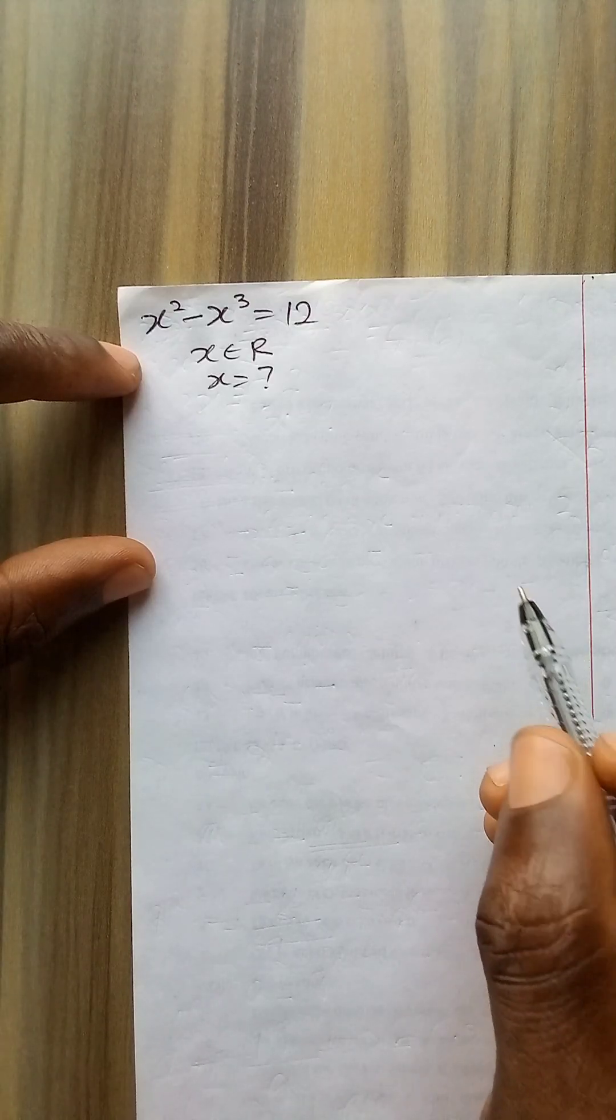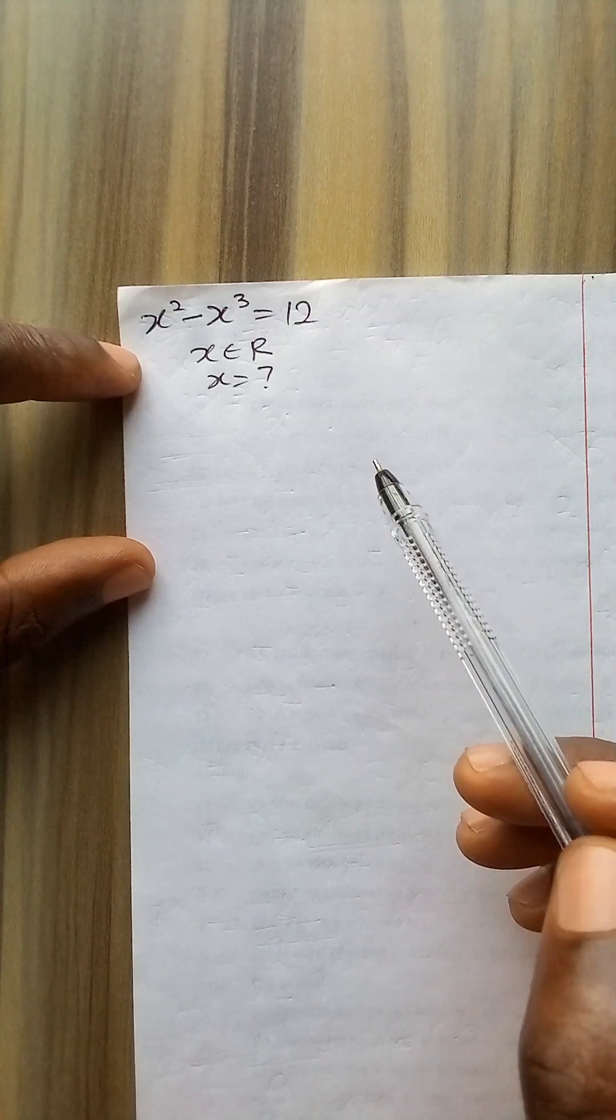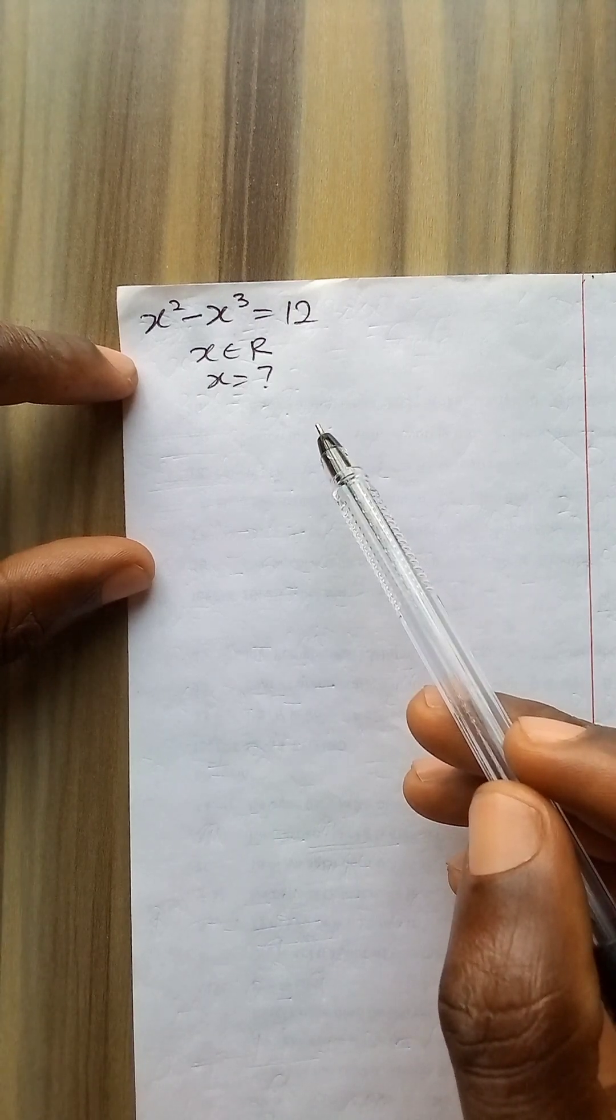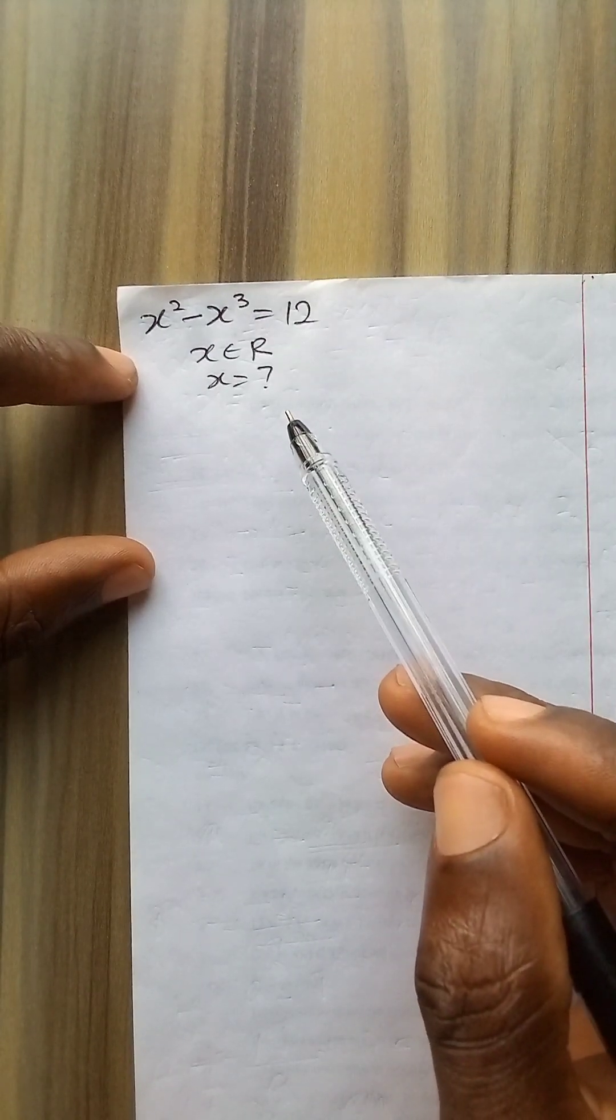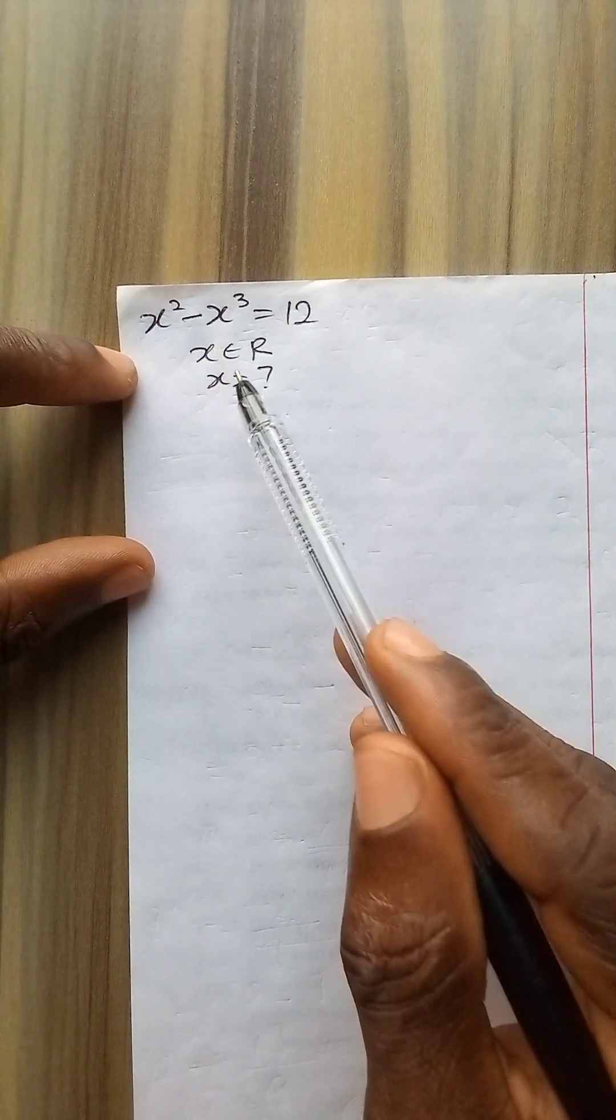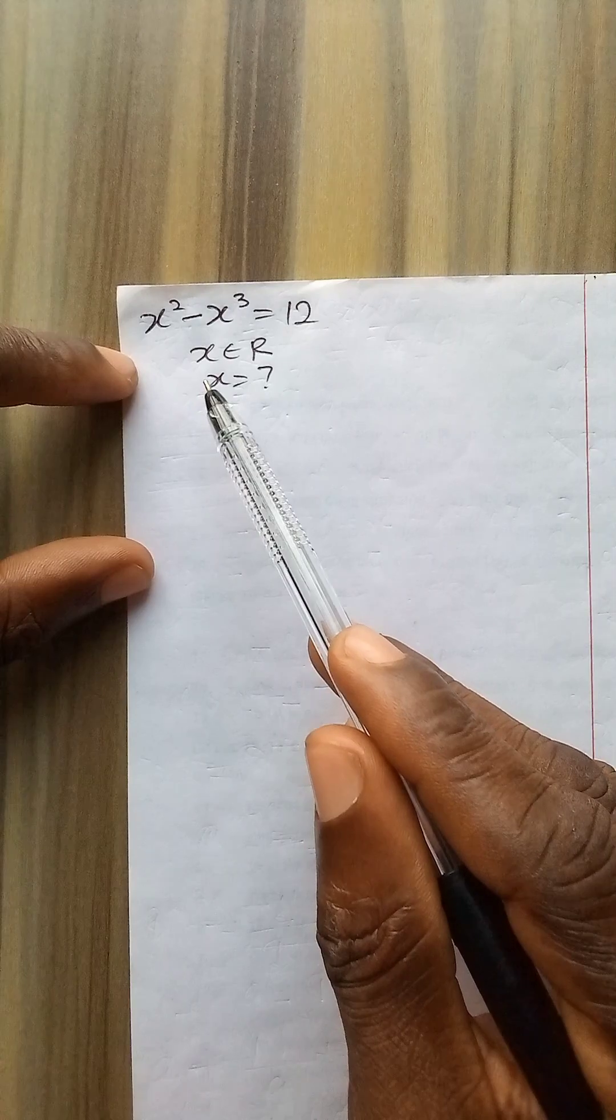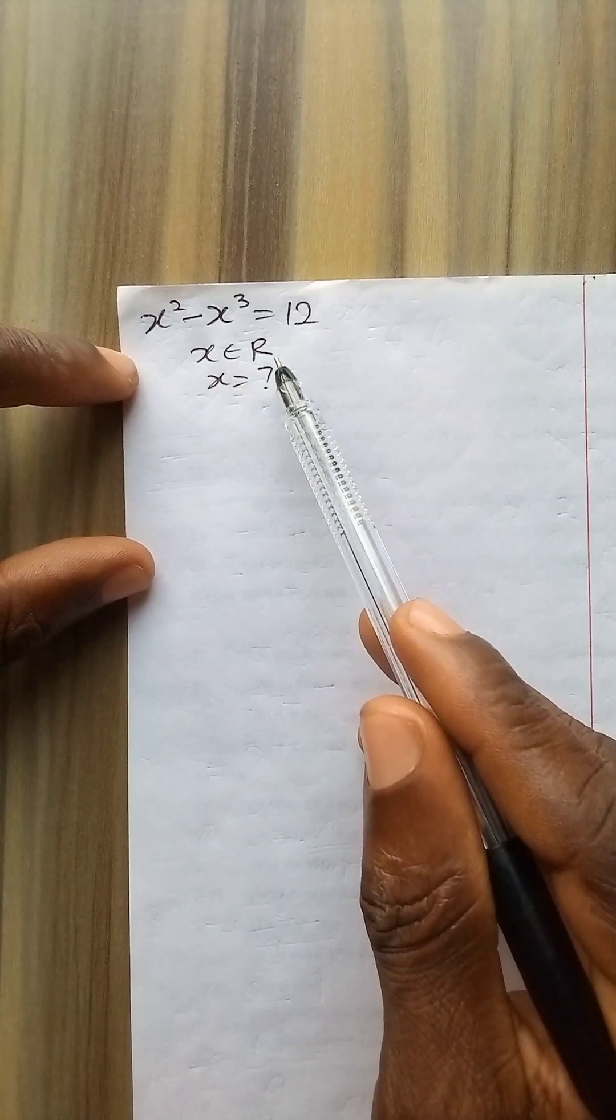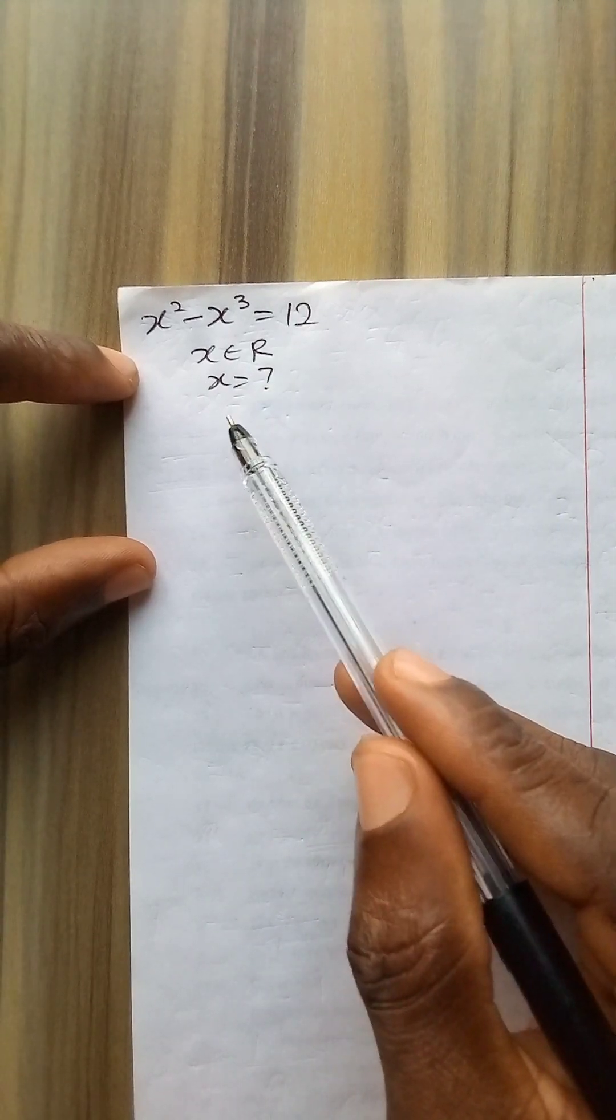Hello everyone and welcome to another video in my channel. In this video, we are given a polynomial equation to solve: x to power 2 minus x to power 3 is equal to 12. Given that x is a member of the set of real numbers, we are asked to find the value of x.